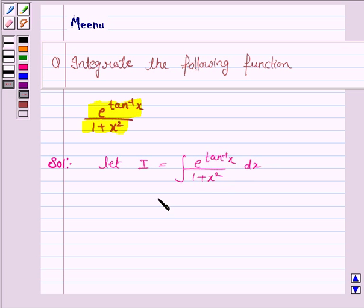So we put t equal to tan inverse x. So dt by dx is equal to 1 upon 1 plus x square.